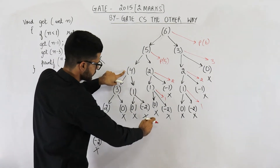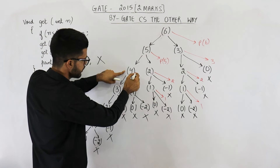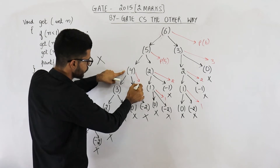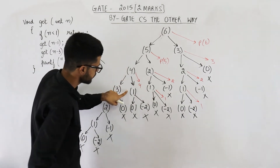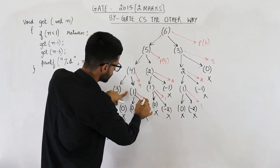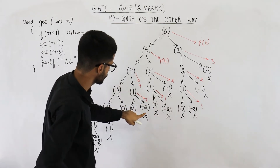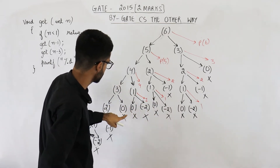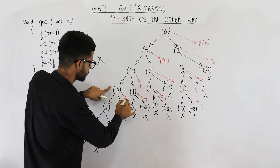Then let us talk about this part. Get(4) is going to print 4. This one is going to print 1. Some will end. This one is going to print 3.